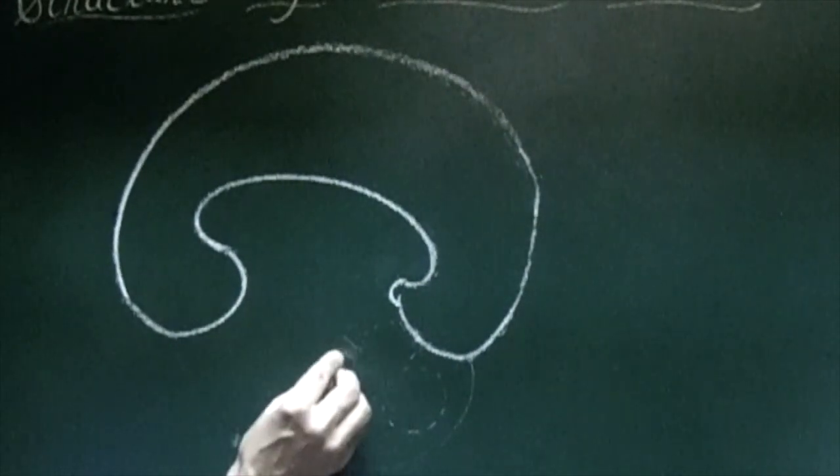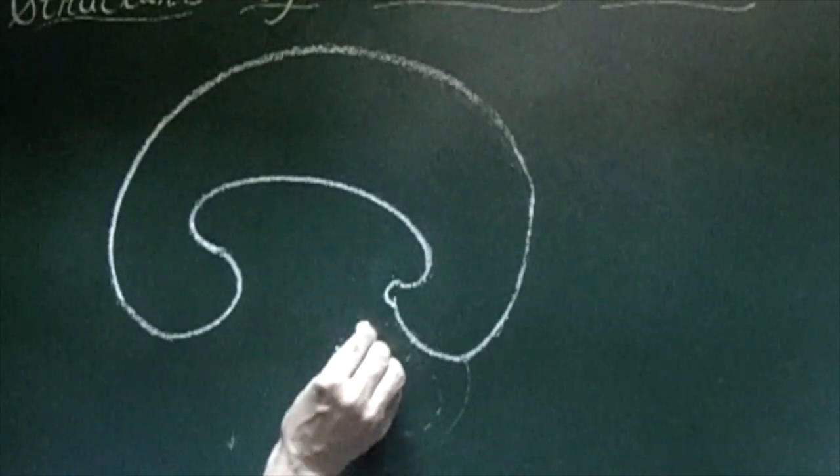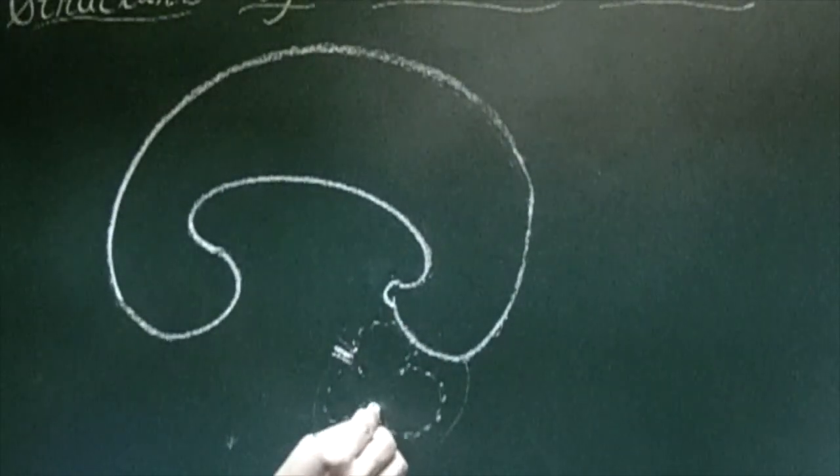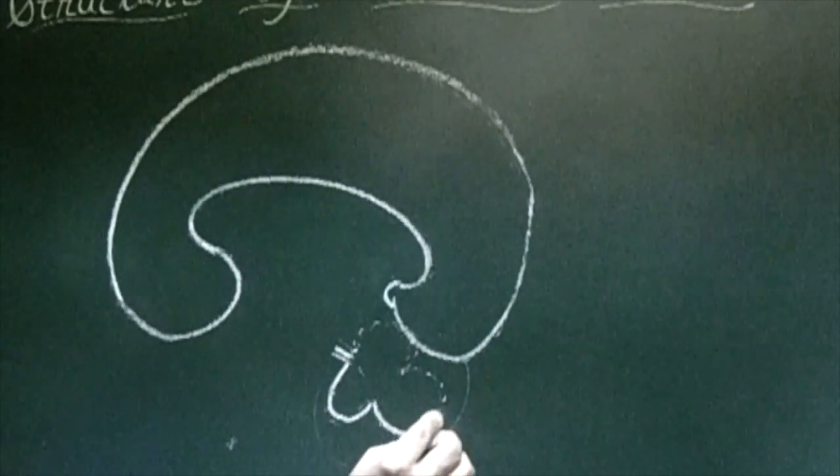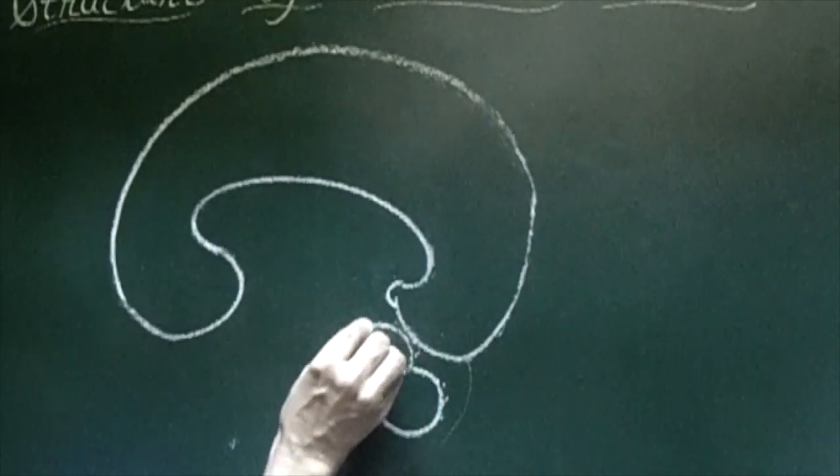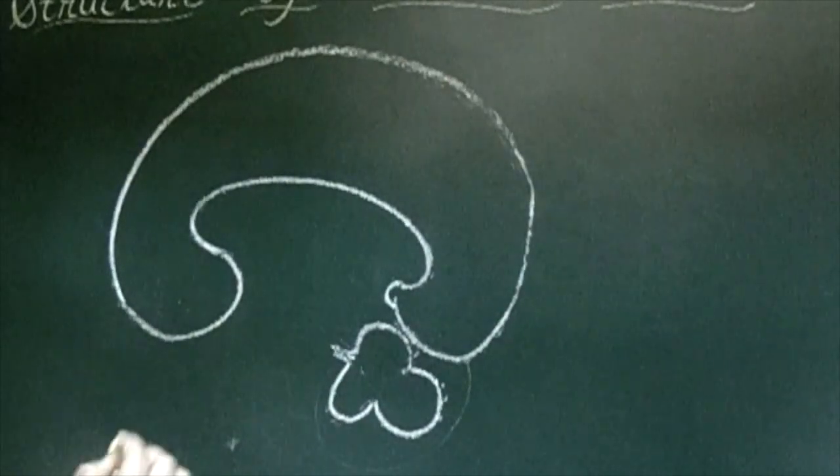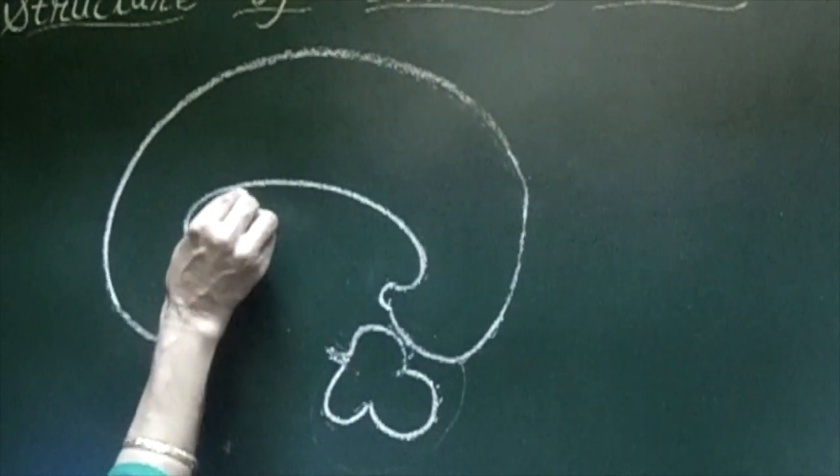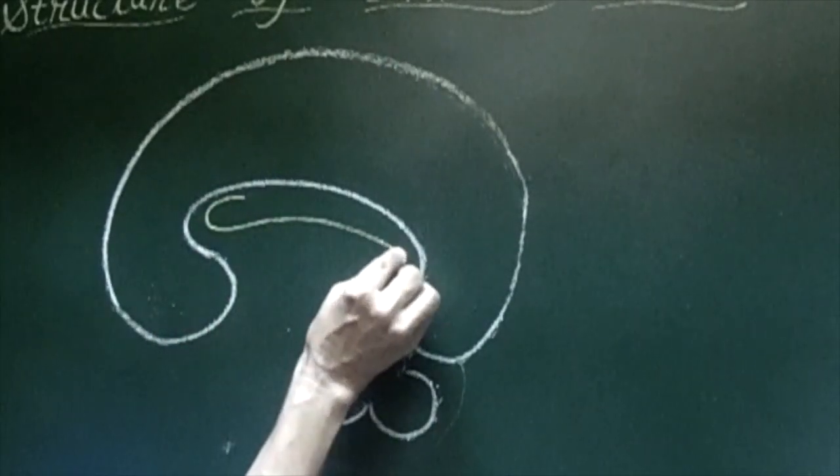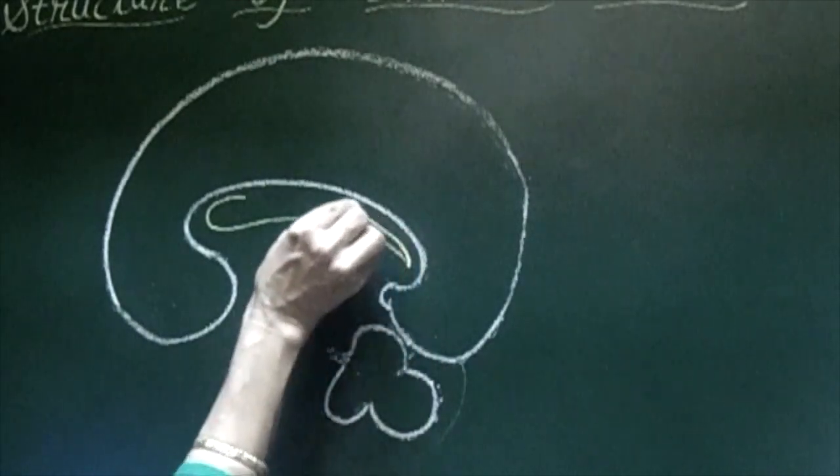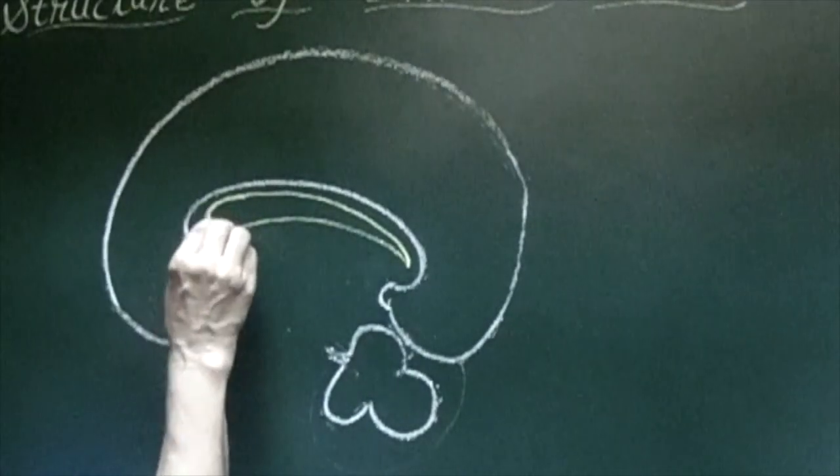Second step, you just draw a structure like tree which will be having three flower-like structures. Clear this much. Now next we will be drawing a comma-like structure. Perfect.